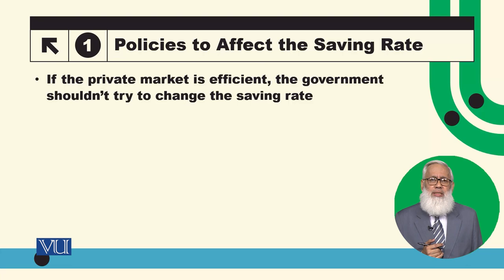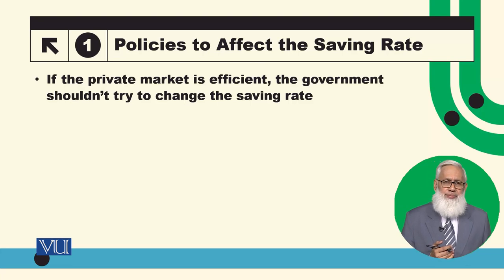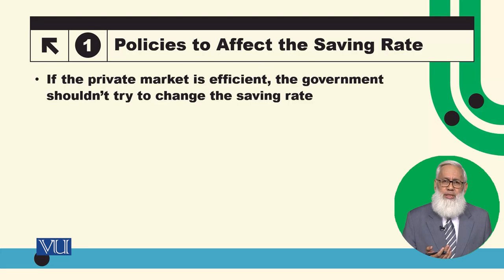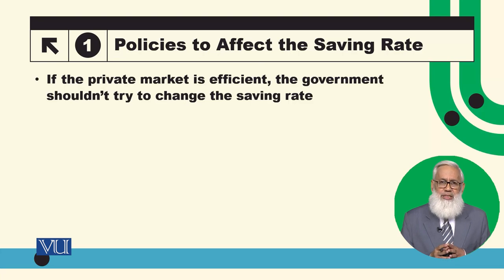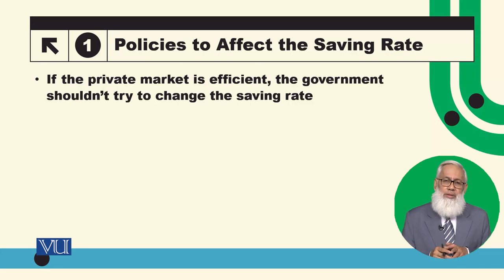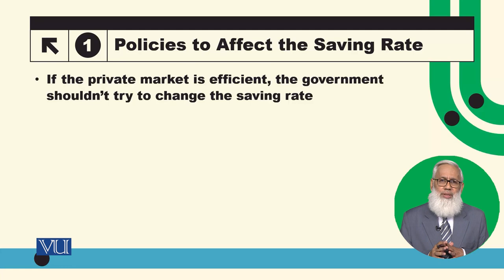If private markets work efficiently — if we have an invisible hand — then we should not intervene. Government intervention in the private sector will decide how much saving is going to be. Saving is basically a trade-off between your current consumption and future consumption. You reduce today's consumption, which we call saving, so that we can have more future consumption. This trade-off will be optimal if the private sector is working efficiently.